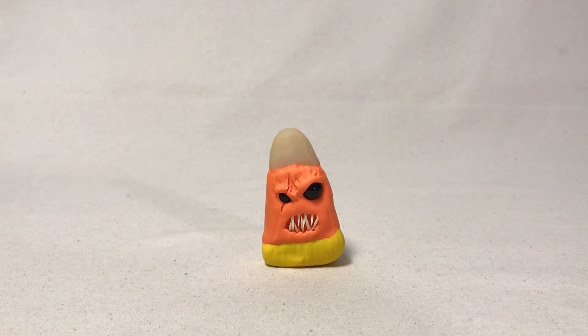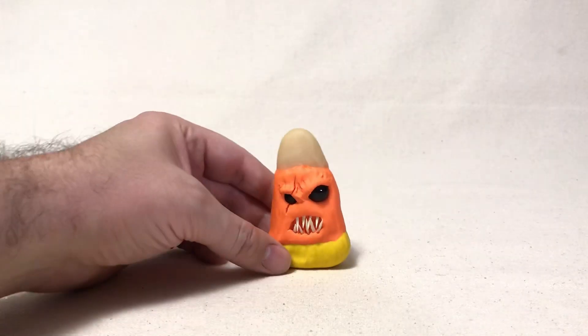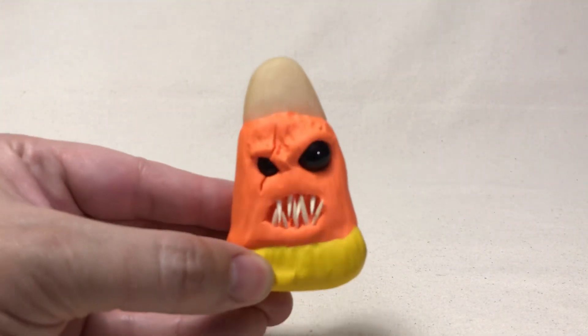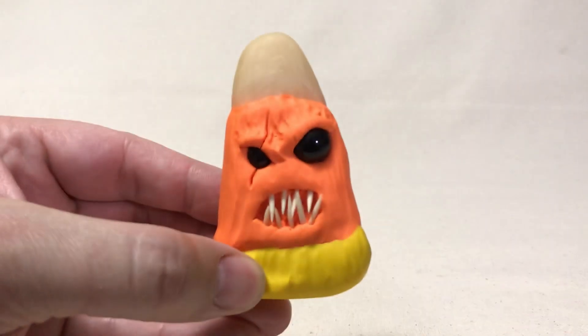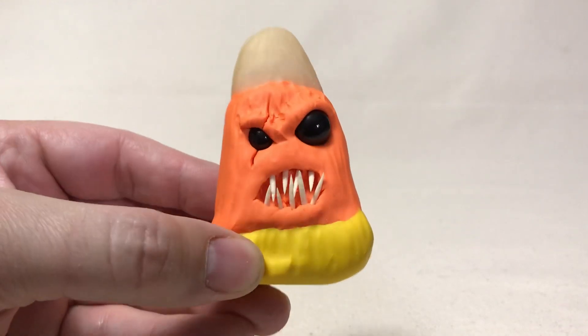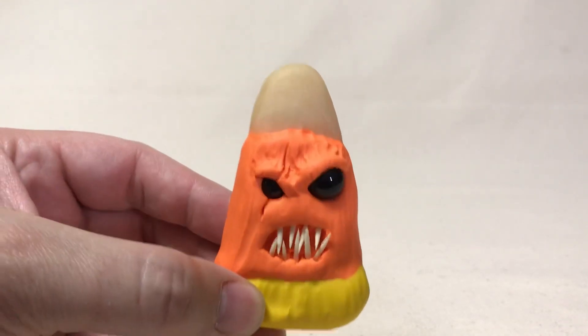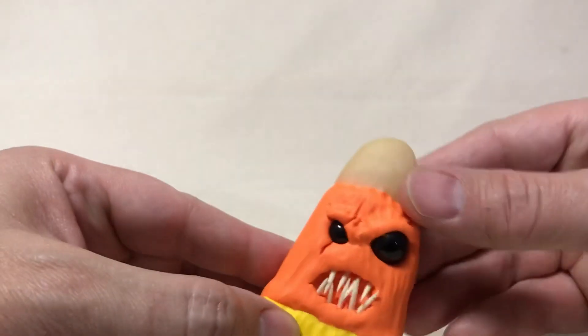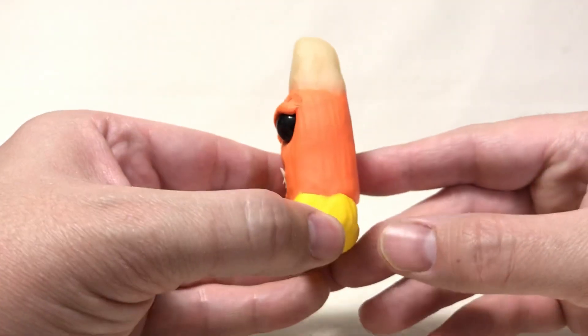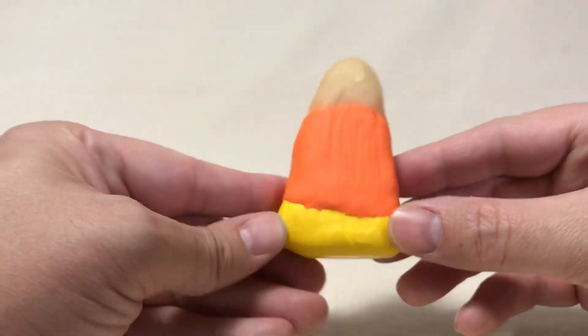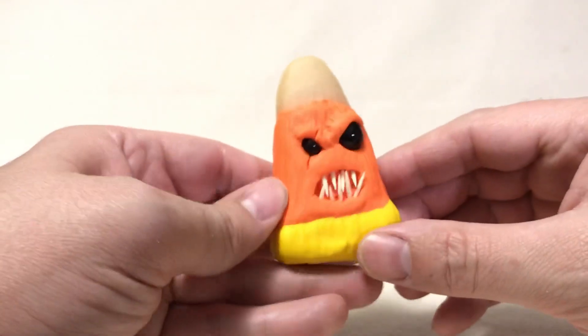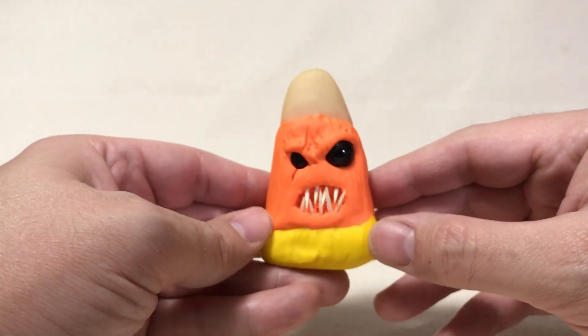And here is the finished candy corn monster. Take a little closer look at this guy. Look at those beautiful teeth. I'm really happy how he turned out. He was a lot of fun to do. He just kind of looked like this grumpy piece of candy. I think it would be fun to make some smaller ones or do a whole bunch and put them in a bowl.